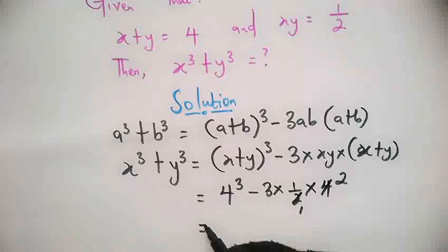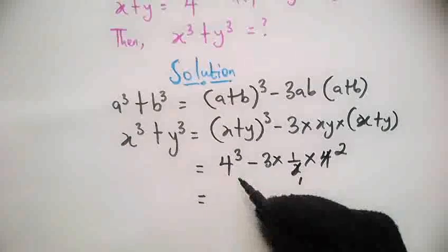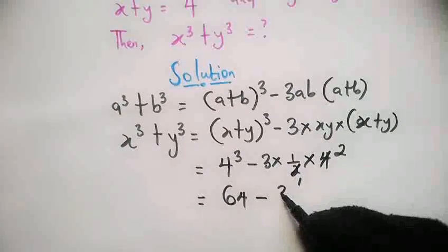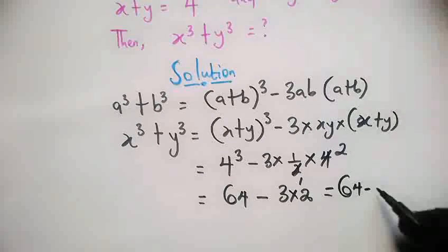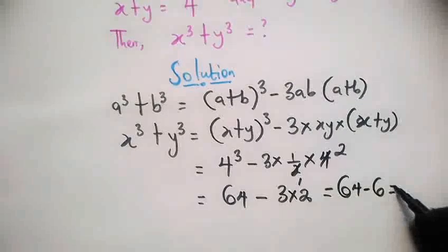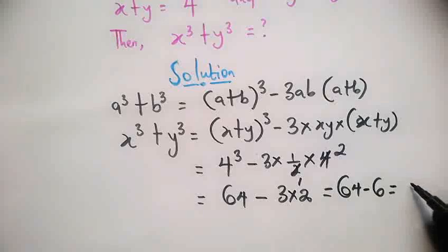So we have 4³ = 64 minus 3 times 2, and this equals 64 - 6, which gives us 58.